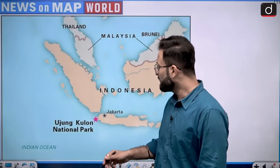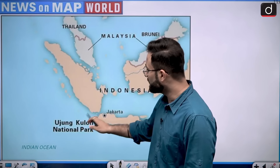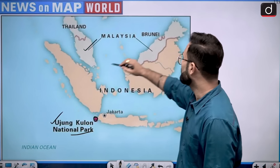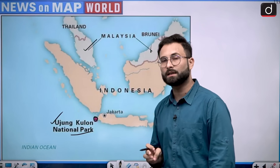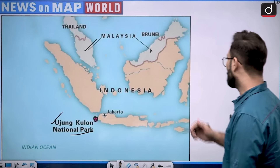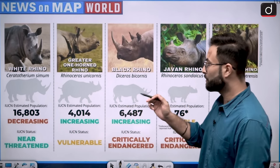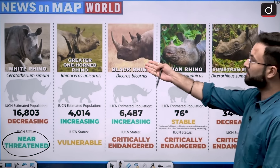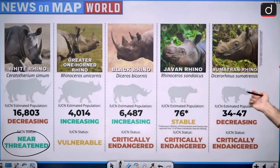Moving further, here you will see this is the area in Indonesia. There is Jakarta, and in the vicinity of that you have Ujung Kulon National Park. You can see Malaysia here, this is Brunei, and this whole part is basically Indonesia. Recently the capital of Indonesia has been shifted — you can answer in the comment box from which place to which place. These are the different types of rhinos: white rhinos are near threatened, then there is the greater one-horned rhino which is vulnerable, then black rhino, Javan rhino, and Sumatran rhino.